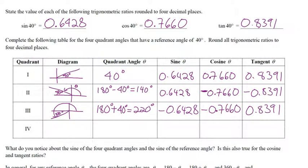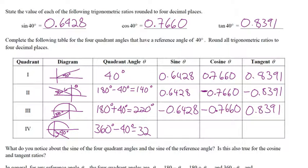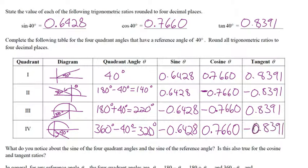And lastly, we want a reference angle of 40 degrees in quadrant 4. The rotation angle will be 360 degrees minus 40 degrees — it's a full rotation and we back up 40 — which is 320 degrees. What is the sine of 320 degrees? Negative — but the exact same values. What's the cosine? Positive. What's the tangent? Negative, because tangent is negative in quadrant 4.